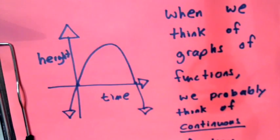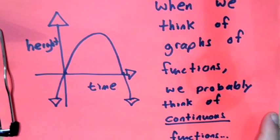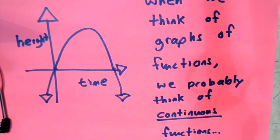When we think about the graphs of functions, we usually think about continuous functions because when we graph a physical quantity like the height of a ball that's thrown in the air and we graph height over time, that is a continuous function. Physical processes are usually continuous with respect to time.